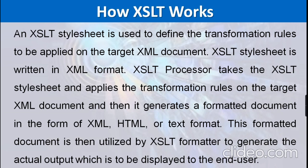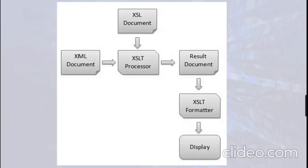As shown in this figure, if you have an XSL document and an XML document, both are to be converted by the XSLT processor. Whatever the resultant document is, it is formatted with the help of XSLT transformation rules. After formatting, whatever result we are going to display is rendered by the XSLT formatter. In this way we can display the content or data of the XML document.